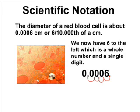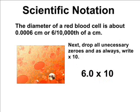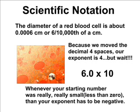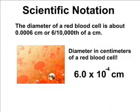Now that we have our single digit whole number, we drop all unnecessary zeros. We do not need any of the zeros in front of the six, so we get rid of them. Then we always write times 10 and then our exponent. In this case, we moved the decimal four places to the right. Because we started with an extremely small number, we must have a negative exponent. In math, a negative exponent simply means our value is a fraction or a value less than one. So we write to the negative fourth power. And now we have expressed the diameter of a red blood cell using scientific notation: 6.0 times 10 to the negative fourth power.